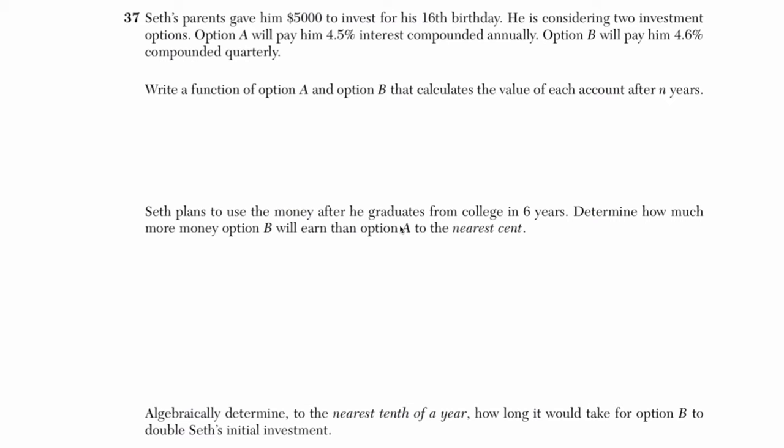Alright, so Seth's parents gave him $5,000 to invest for his 16th birthday. He's considering two investment options. Option A will pay him 4.5% interest compounded annually. Option B will pay him 4.6% compounded quarterly. I'm going to just underline a couple of those things. Starting off at $5,000, A is giving 4.5% compounded annually, where B pays 4.6% compounded quarterly.